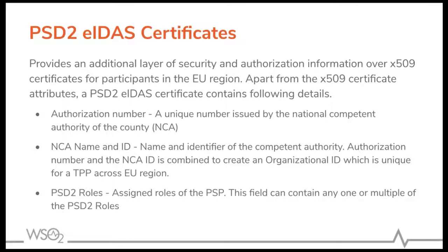A TPP also has a set of PSD2 roles. The PSD2 specification defines four types of roles: account servicing, payment initiation, account information, and issuing of card-based instruments. A particular TPP can have any one or multiple of those roles. The certificate itself also contains the roles assigned to the TPP, so an ASPSP can identify the set of roles assigned to the TPP. The certificate thus contains the organizational ID to uniquely identify the TPP, and the required roles assigned to that TPP — both useful for the ASPSP to properly identify and authorize the TPP.